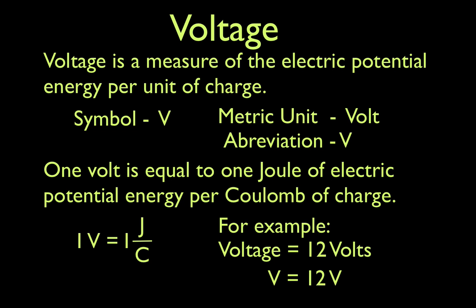The symbol for voltage is V. The metric unit for voltage is the volt, and the abbreviation for that metric unit is also V. So that one's pretty straightforward: V, volt, and V. One volt is equal to one joule of electric potential energy per coulomb of charge. We would write that down as: one volt equals one joule per coulomb. It's one joule of energy per coulomb of charge.